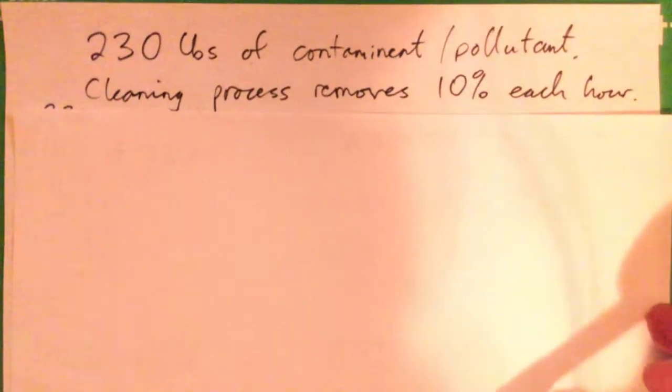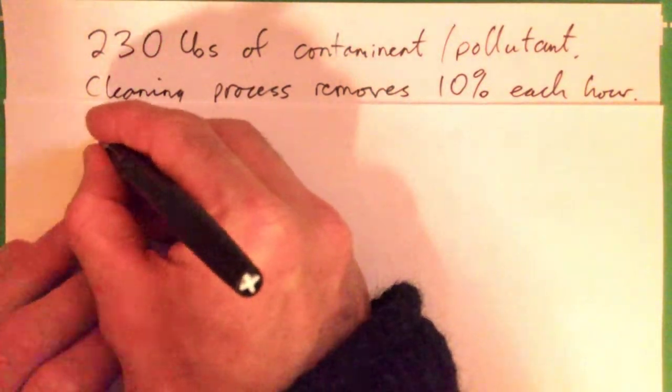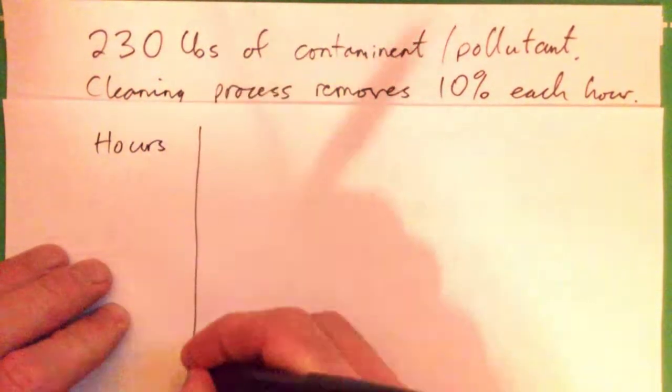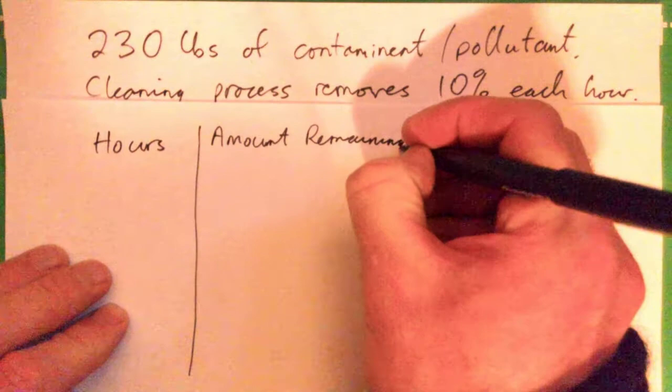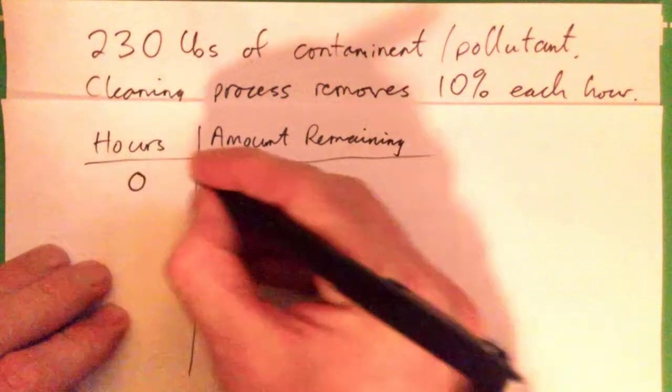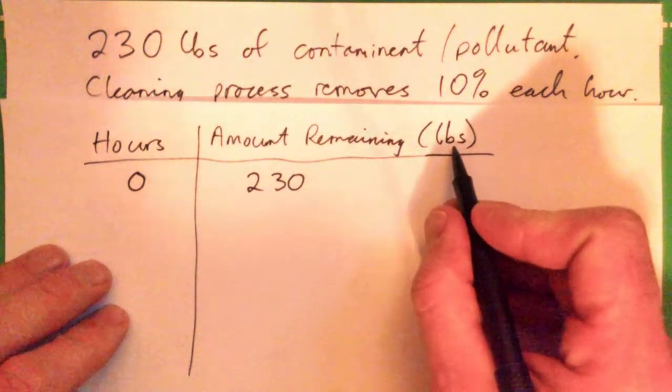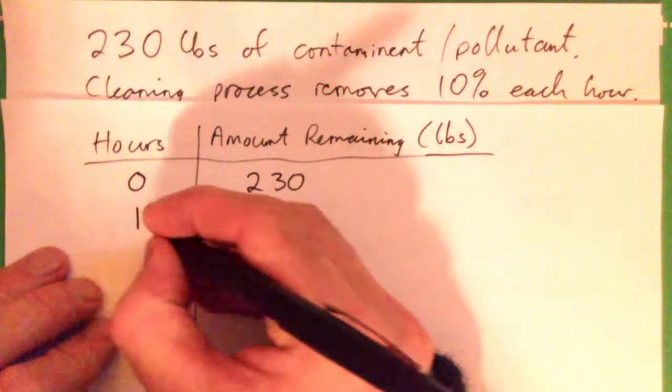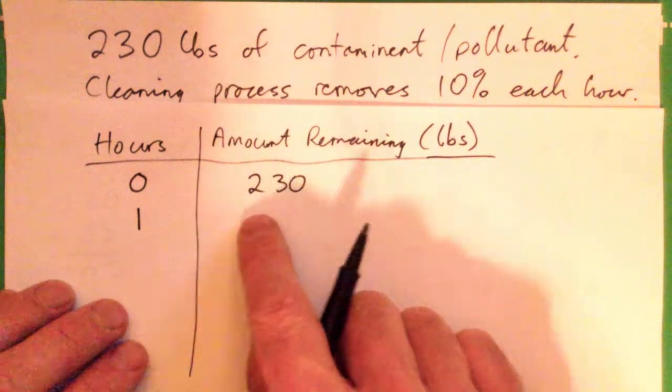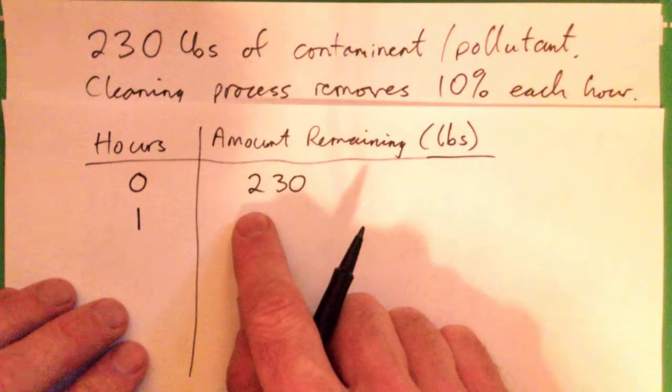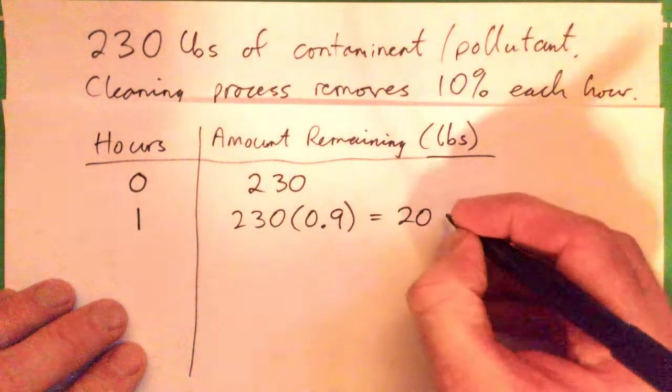So once we have that trick, what we're going to do is make ourselves a nice little table. We're going to go hours and amount remaining. So initially zero hours, I start with 230 pounds. So this is in lbs, which is pounds.